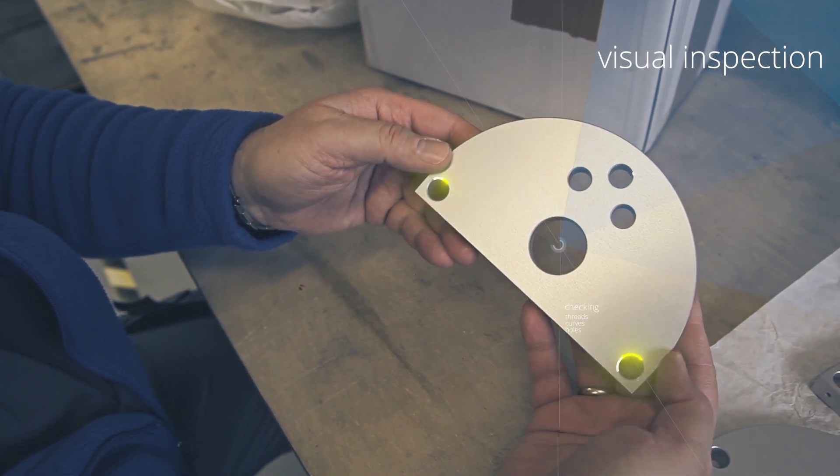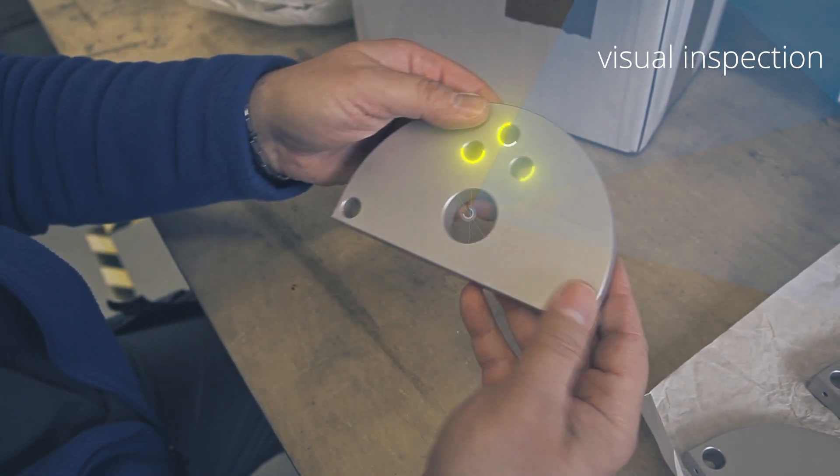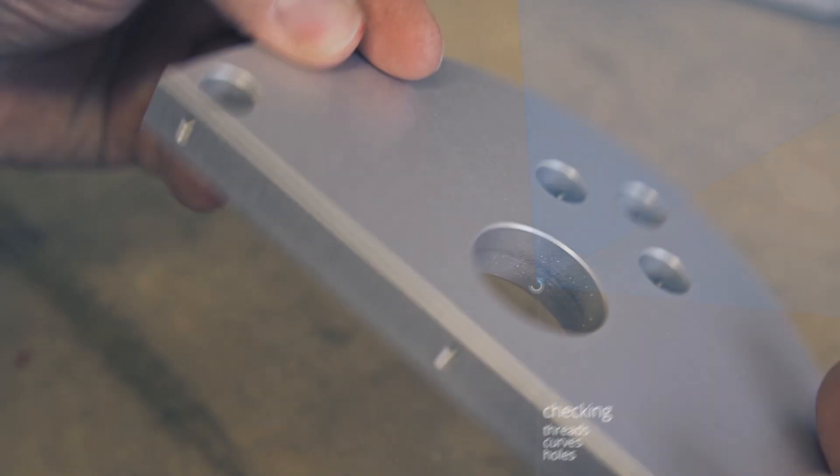We check that the part matches the model with its threads, curves, and holes. There are no visible damages or scratches. The finish has no blemishes or patches.